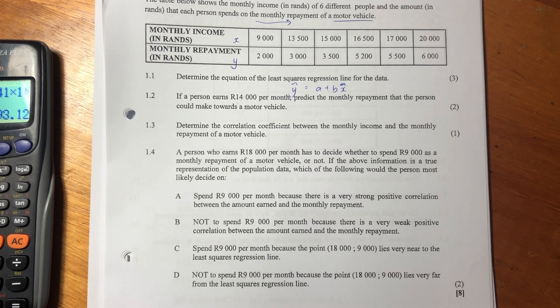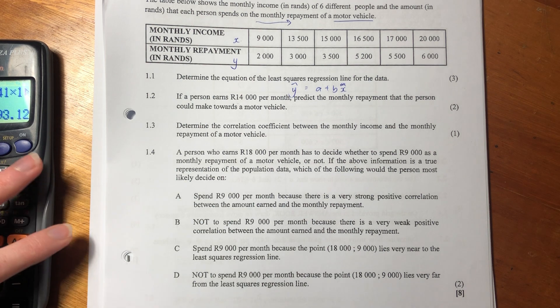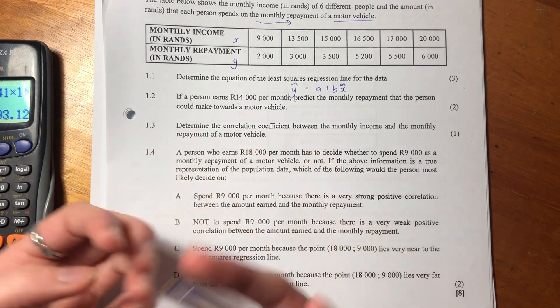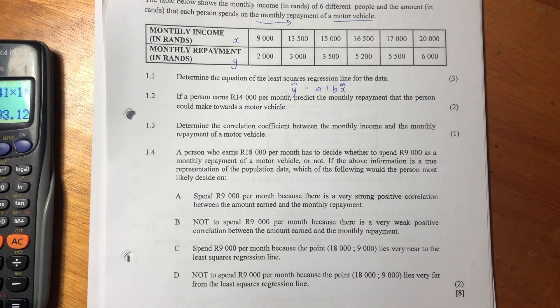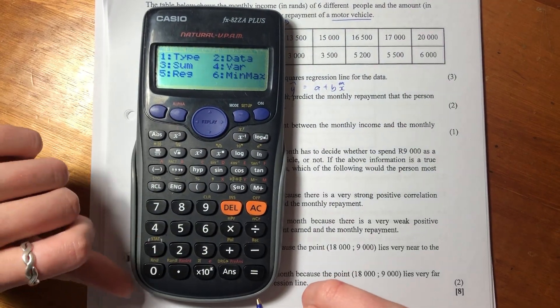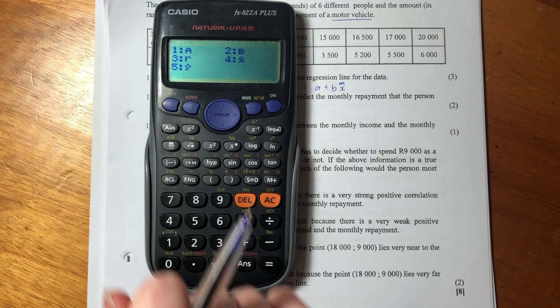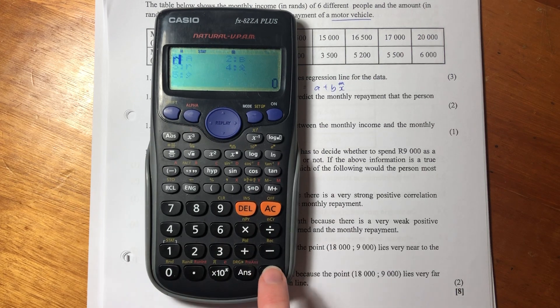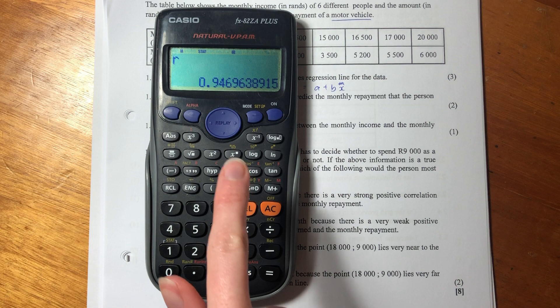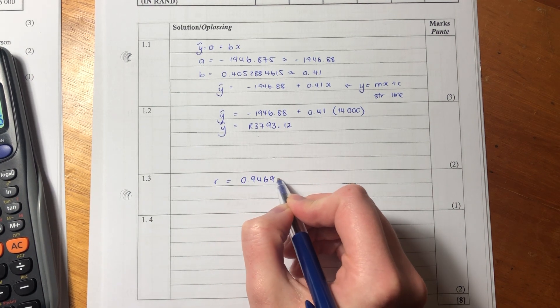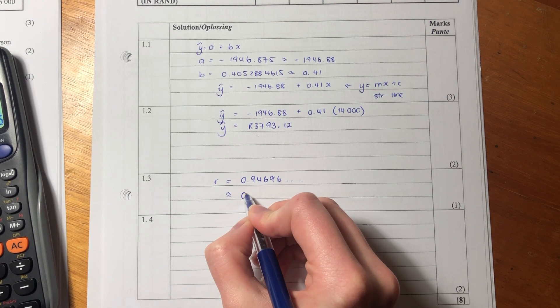Let's now go on to 1.3. So 1.3 says, determine the correlation coefficient between the monthly income and the monthly repayment of a motor vehicle. So this is basically what I put in words earlier, where I said, well, as your monthly income increases, your monthly repayments on a car increases, which means that as you become wealthier, you're more likely to be able to afford a more expensive car and a more expensive monthly repayment. So what we do, we go back here. Our data is still in here. We haven't deleted any of it. Let's go back to stat. And let's go back to regression to where we were. But this time we don't need A, we don't need B, we want R. R is our correlation coefficient. So press 3. And look, our correlation coefficient is 0.94696. It goes on forever. So we can just write in here, R equals 0.94696. You don't have to write all of that. You can just then round it off to two decimal places.